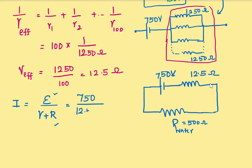I'm sorry, 12.5 plus 500Ω. So this will give 750 divided by 512.5 which is equal to 1.5 amperes approximately.